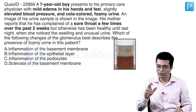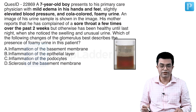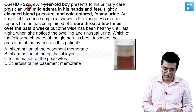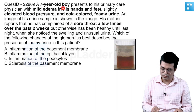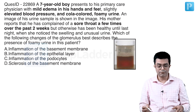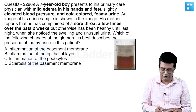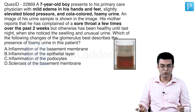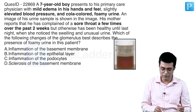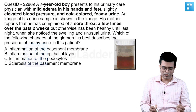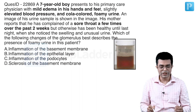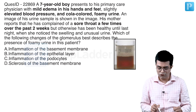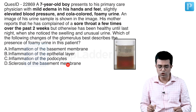Let me give you an example. Here is a question taken from the Q-Bank. A 7-year-old boy presents to his primary care physician with mild edema in his hands and feet, slightly elevated BP, and cola-coloured foamy urine. The image of the urine sample is shown. His mother reports he complained of a sore throat a few times over the past 2 weeks but was otherwise healthy until last night when she noticed the swelling and unusual urine. Which of the following changes in the glomerulus best describes the presence of foamy urine in this patient? Four options are given.